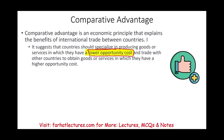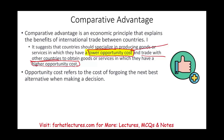You should produce items that you have a lower opportunity cost of producing, and trade with other countries to obtain goods or services for which you have a higher opportunity cost. Produce what costs you least, and buy what costs you more. You should use your resources to produce the product with the lowest opportunity cost, build a surplus, and trade that surplus with other countries.